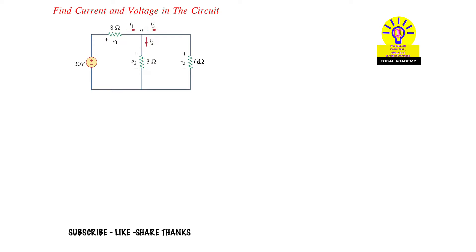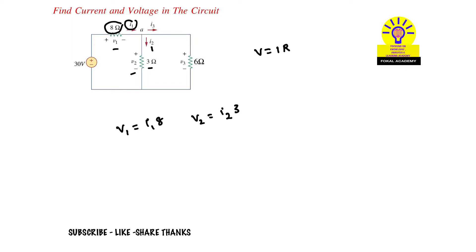We know Ohm's Law: V = IR. Now apply Ohm's Law at each resistor. At the 8Ω resistor, V1 = i1 × 8. Similarly, V2 = i2 × 3, where i2 is the current passing through the 3Ω resistor. Similarly, V3 = i3 × 6, where i3 is the current passing through the 6Ω resistor. Let's consider this as Equation 1.